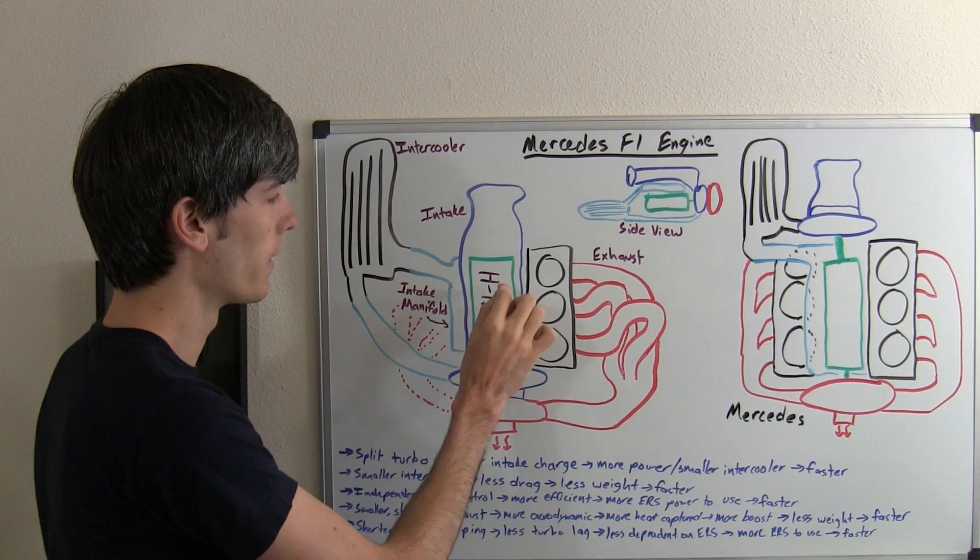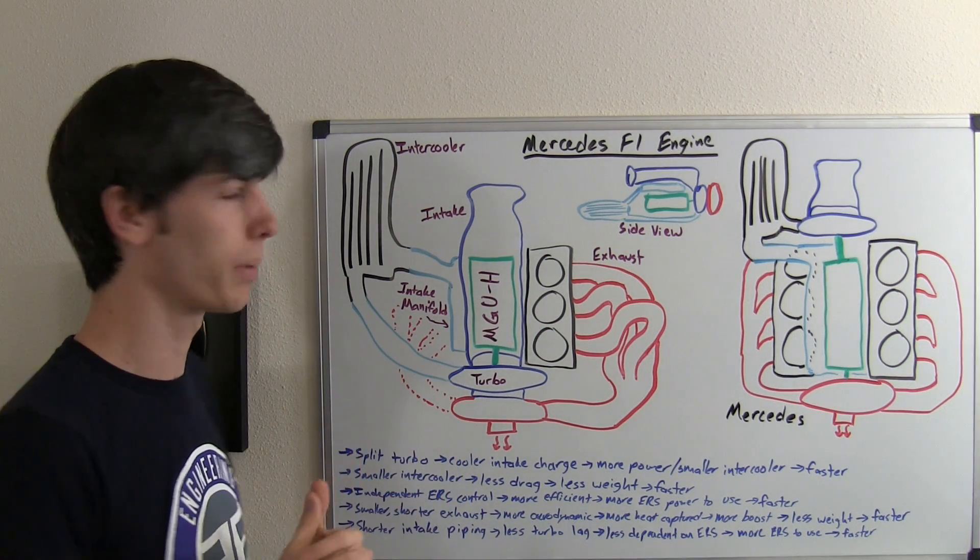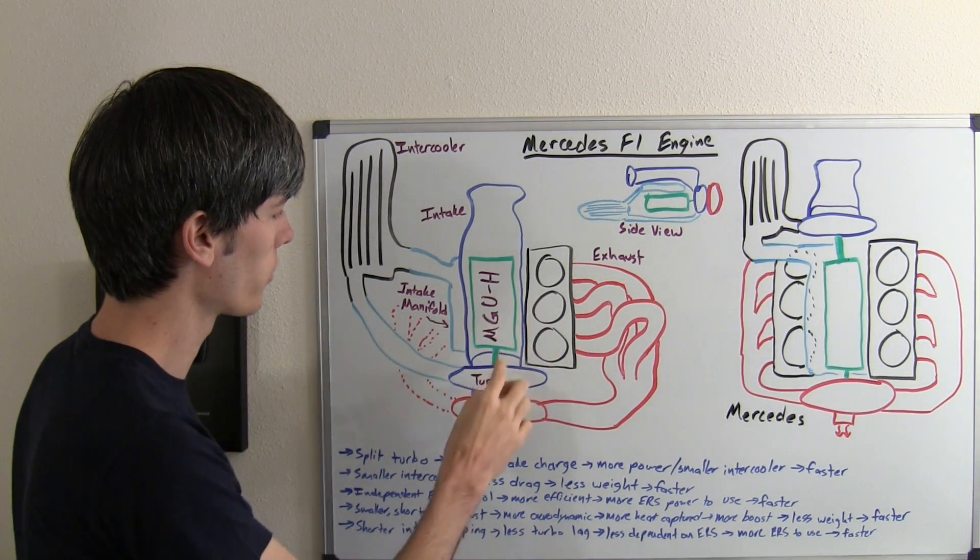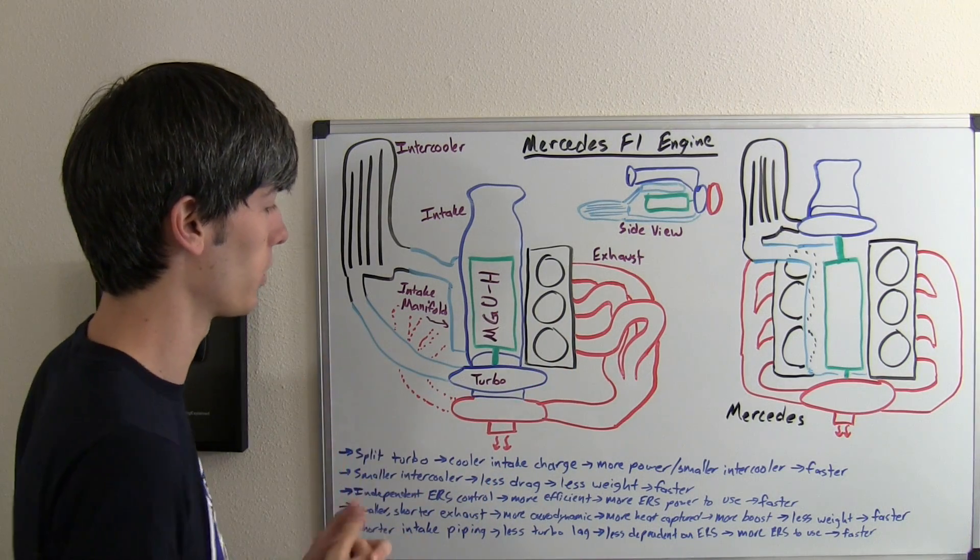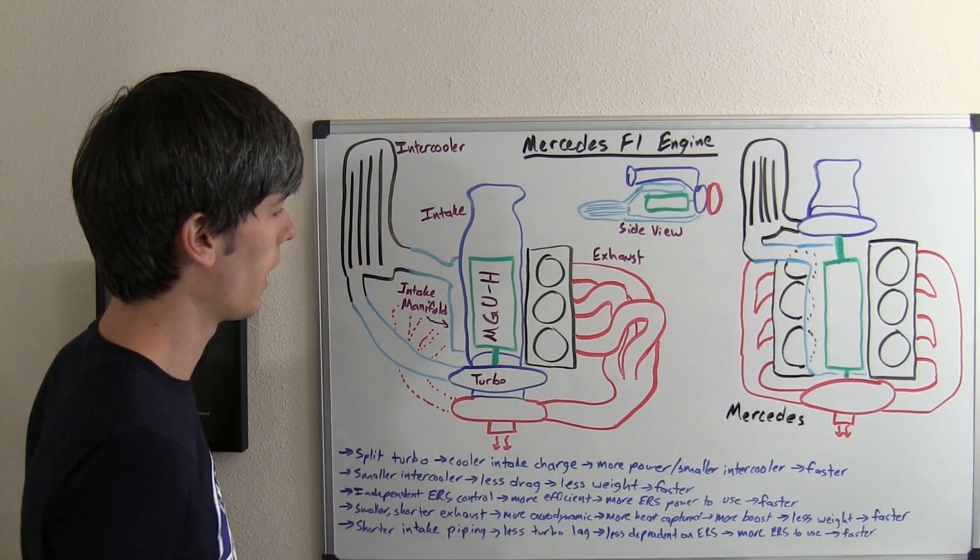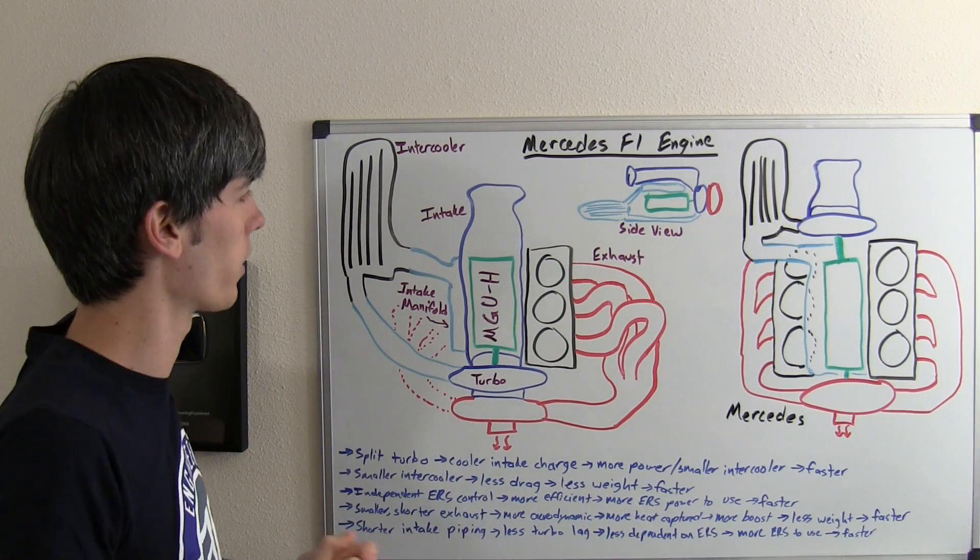You'll also notice this MGUH, which is the heat portion of the ERS system as explained in my 2014 F1 engine video. What this is doing is recovering energy from the turbocharger and then sending that to a battery pack which can then be used later. This is connected to the turbocharger via some sort of shaft, and that's basically what we've got going on with this Renault engine.